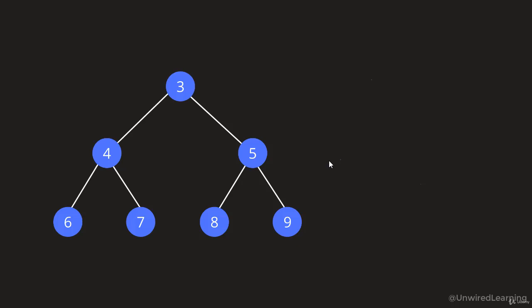The concept of binary tree is simple: each node can have a maximum of 2 children. Here if you look at this particular tree, yes this is a binary tree because maximum we can have 2 children on a particular node. Here we have maximum 2 children, here we have maximum 2 children, here we have maximum 2 children, and here we have 0 children. So it is a binary tree.